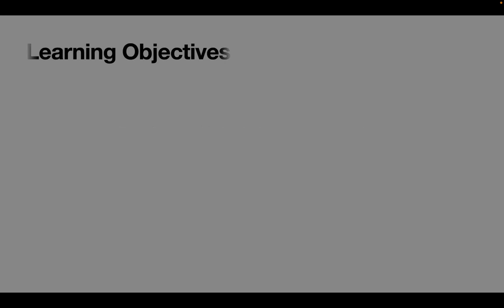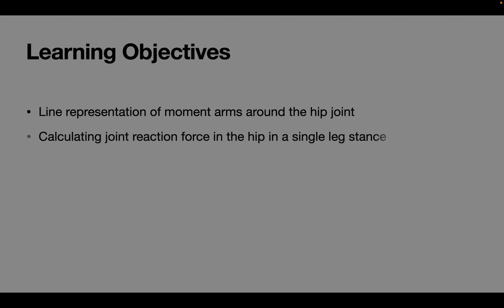In the second part of the hip joint biomechanics, we will learn about the line representation of moments around the hip joint. We will know how to calculate joint reaction force in the hip in a single leg stance and we'll understand and calculate the effect of cane in the opposite hand and weights in the same hand on joint reaction force.